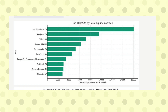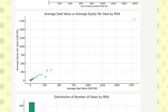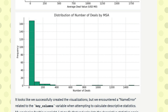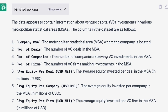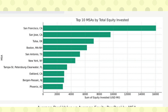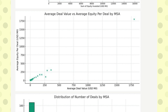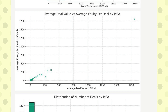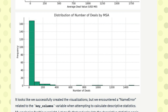ChatGPT produced quite good charts. The data is about venture capital investments in different areas. It created a bar chart showing area-wise total equity invested, another bar chart showing average deal value versus average equity per deal, and a histogram showing the frequency distribution of the number of deals. Overall this looks pretty impressive.